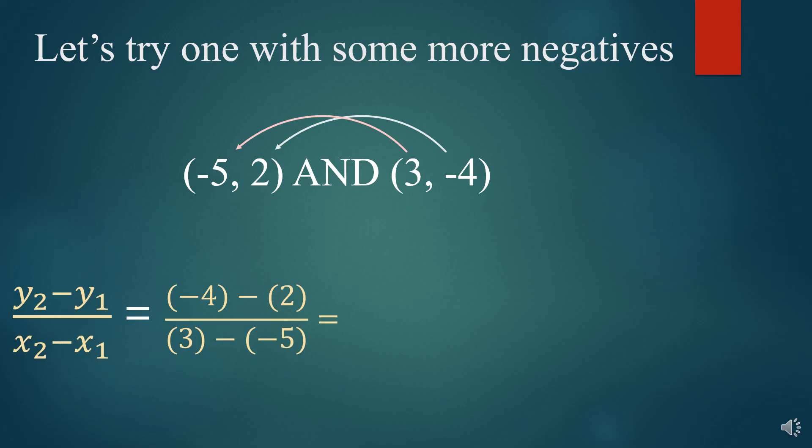And so now we just have to simplify this fraction here. Negative 4 minus 2 is negative 6. And 3 minus negative 5 is 3 plus 5, which is 8. And so we get negative 6 over 8. And again, this needs to be simplified. So we are going to simplify that to negative 3 over 4. It doesn't matter if the negative is out front or on that 3. That is still the same number. And that is your slope.